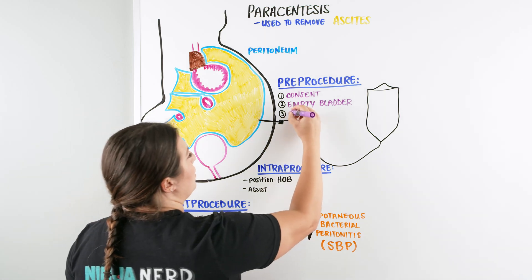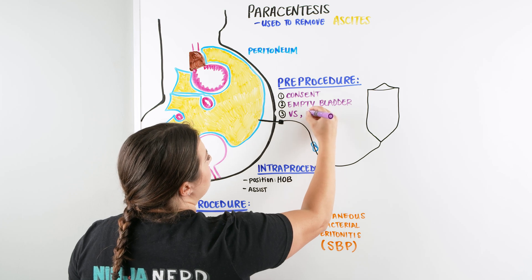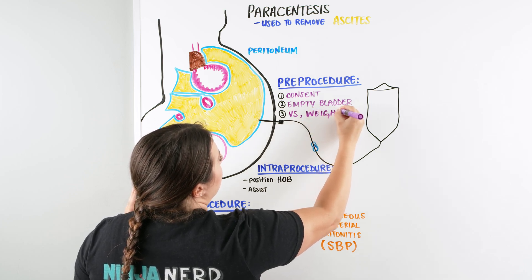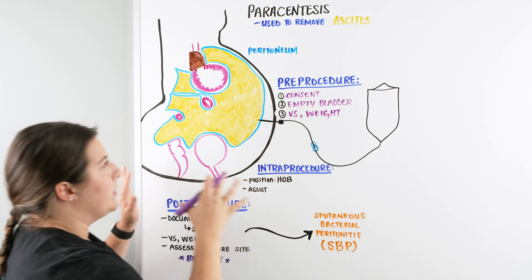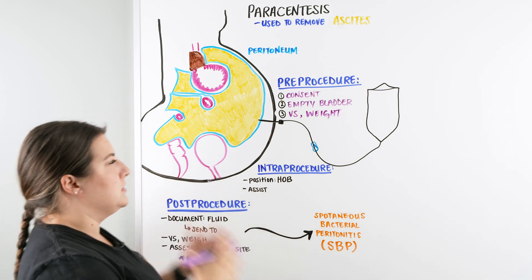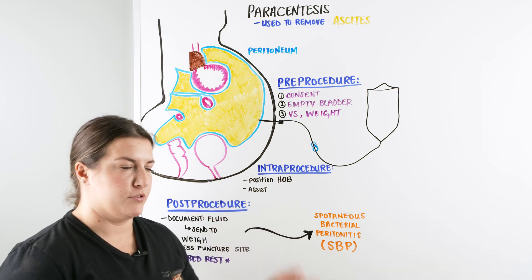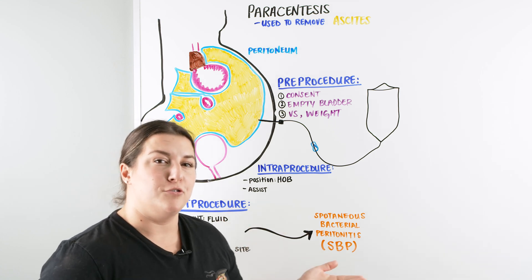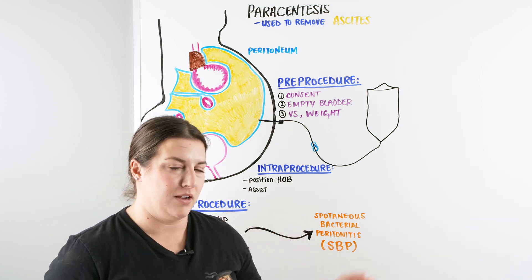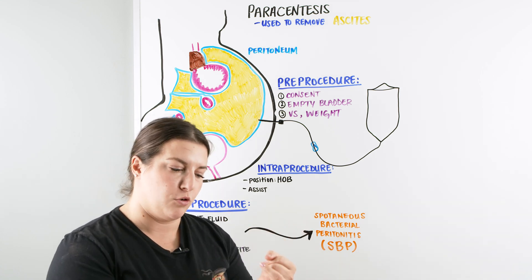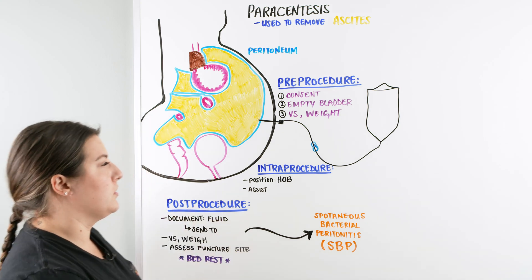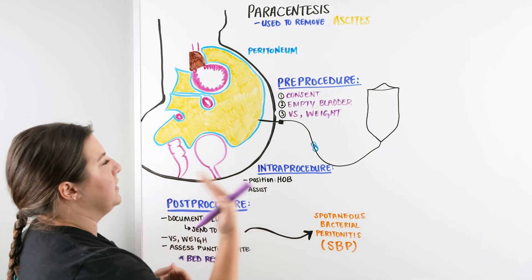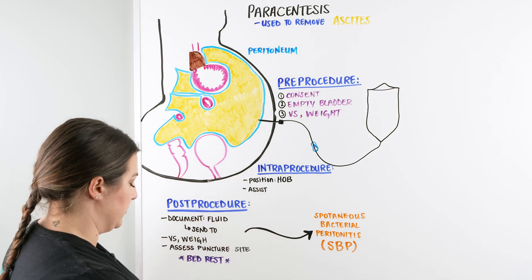The last thing in pre-procedure is to get baseline vital signs and weight. When I think of paracentesis, think of it as an I and O procedure — we're going to be taking fluid out. So we do those basic things to monitor intake and output, which means weight and vital signs. We're specifically looking at blood pressure, heart rate, and weight before we perform the procedure.